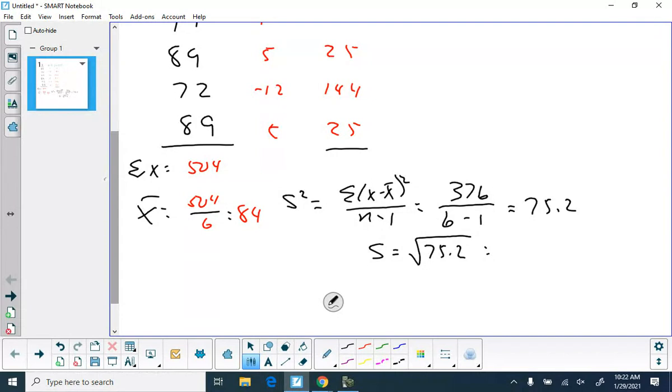And then to find our standard deviation, we take the square root of 75.2. Our data values are whole numbers, so you're going to round to the nearest one decimal place. What did you come up with? 8.7.